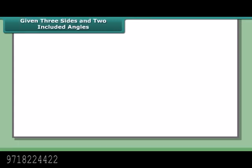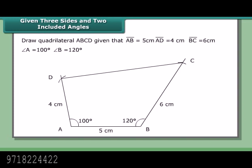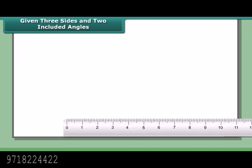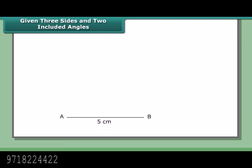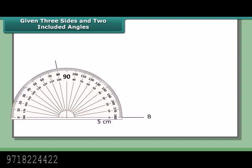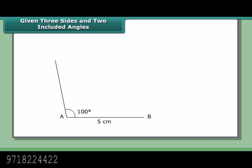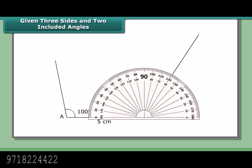Given three sides and two included angles, draw quadrilateral ABCD with AB = 5 cm, AD = 4 cm, BC = 6 cm, angle A = 100°, angle B = 120°. Steps: 1. Draw AB = 5 cm. 2. At A, draw an angle of 100°, and at B draw an angle of 120°.